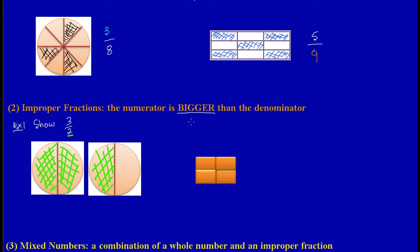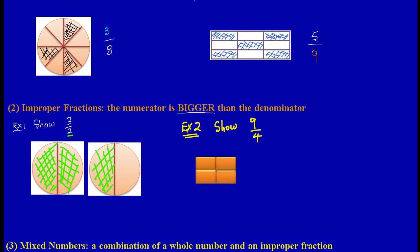In exercise two, we are asked to show nine over four. Remember, our denominator tells us how many parts are in the whole, while the numerator tells us how many parts we are speaking about. Inside one hole there are four parts, but we're asked to shade nine, so this suggests we're going to need more than one diagram.